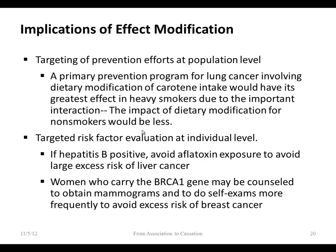At the individual level: if you're hepatitis B positive, aflatoxin exposure is a worse risk factor for liver cancer than if you're not hep B positive. A clinician should pay more attention to hep B positive people and ensure they're not exposed to aflatoxin. Similarly, if a woman carries the BRCA1 gene and is at higher risk for breast cancer, you can counsel her more intensively — more frequent mammograms, self-exams — because that gene acts as an effect modifier, amplifying existing risks, requiring more careful screening.